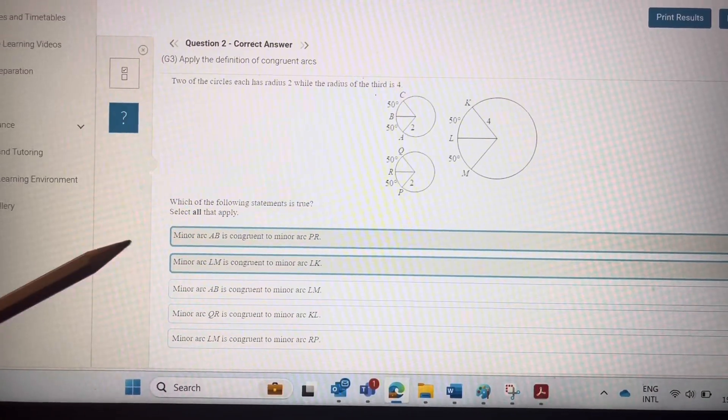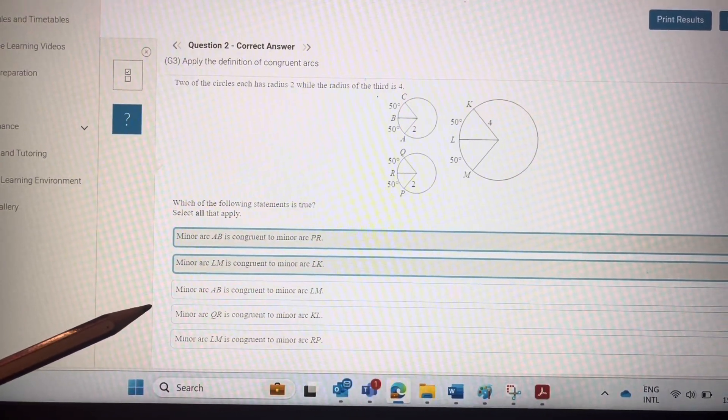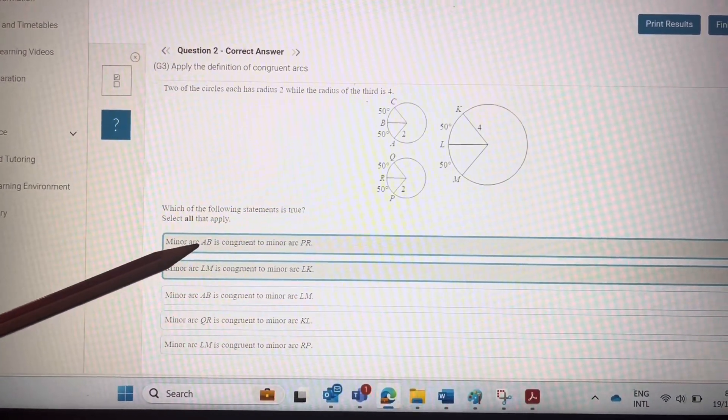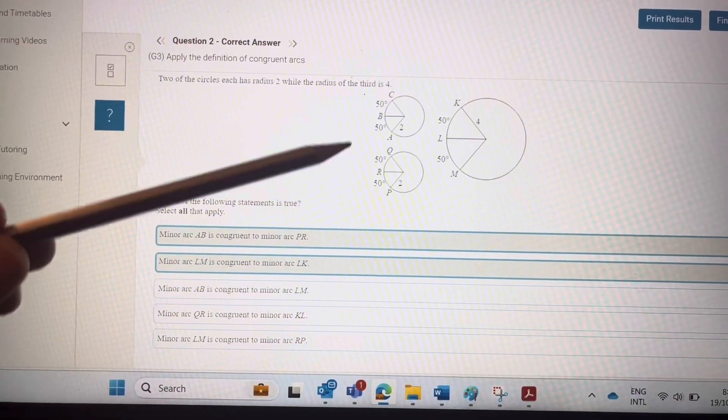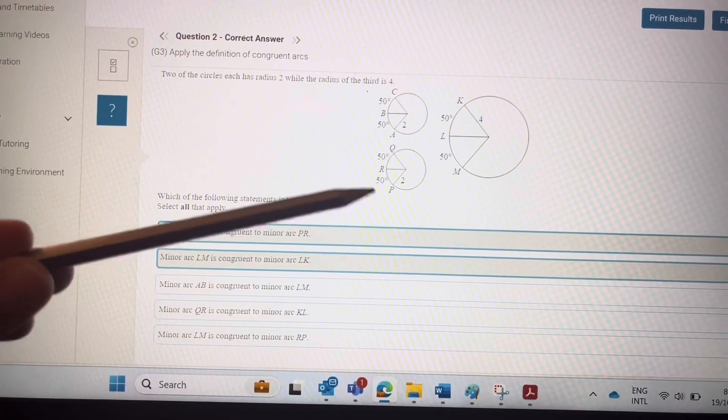We have three circles, and he's asking to select the correct options. So minor arc AB is congruent to minor arc PR. AB and PR, this is correct.